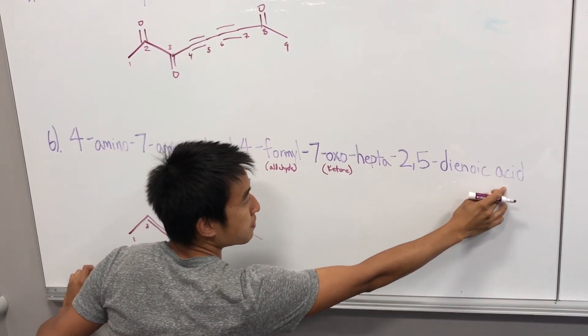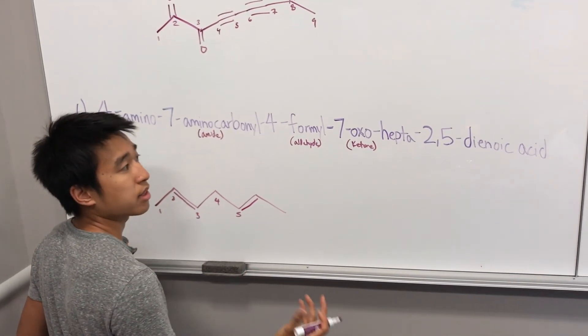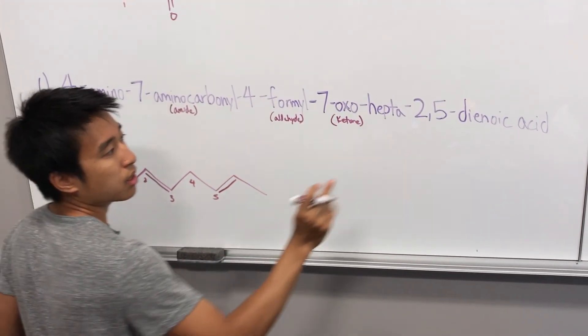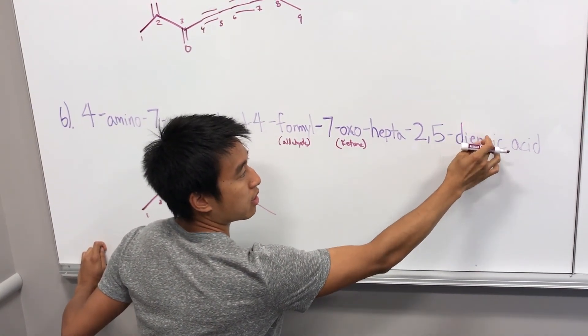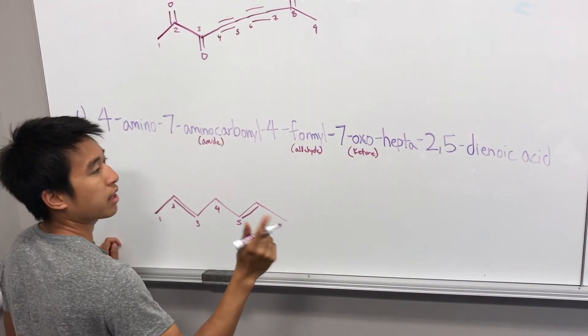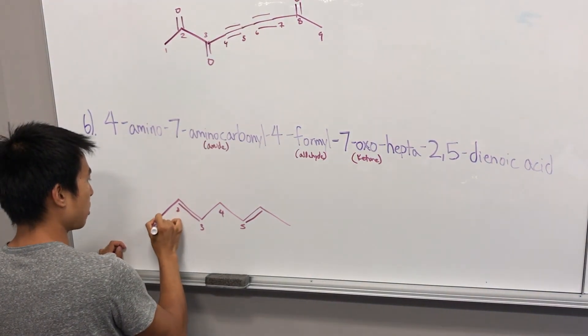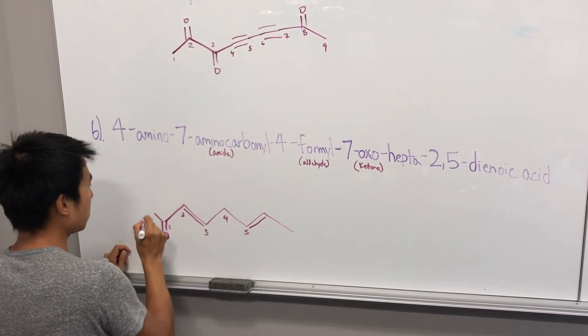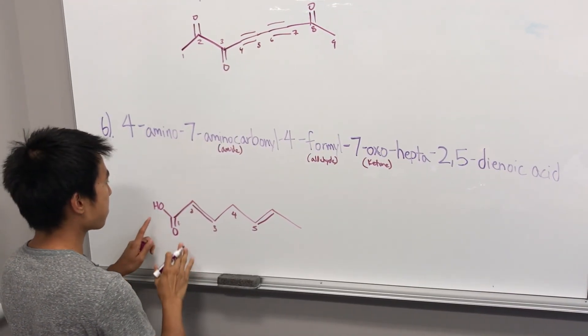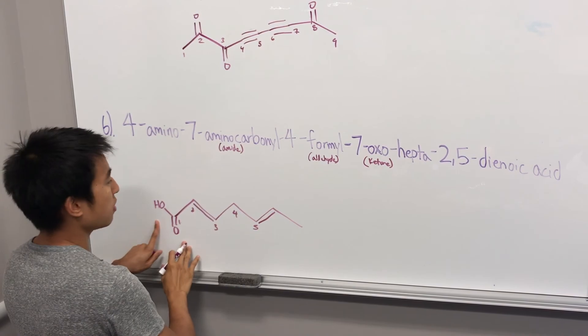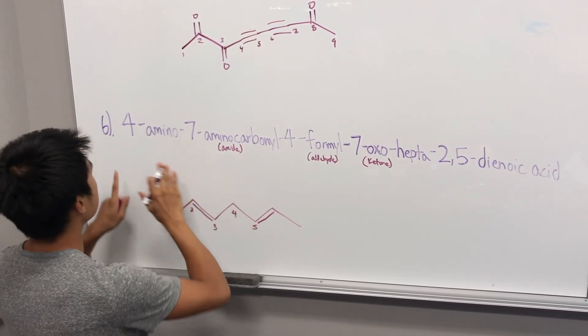And then oic acid, meaning we have a carboxylic acid. We don't have two because if we did it would say dienedioic acid. Because there's no di here, it means that we only have one carboxylic acid, and that's at carbon one, the starting part of the chain. So you throw in your carbonyl, pop in your OH, and that's your carboxylic acid.